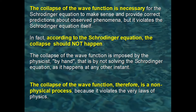The collapse of the wave function is necessary for the Schrödinger equation to make sense and provide correct predictions about observed phenomena, but the problem is that it violates the Schrödinger equation itself. The collapse is imposed by the physicist by hand, that is, by not solving the Schrödinger equation as it happens at any other instant. In fact, according to the Schrödinger equation, the collapse should not happen. In quantum mechanics, the Schrödinger equation has the same role as the three principles of dynamics in classical mechanics — it represents the fundamental physical law which determines the evolution over time of the wave function of any physical system. The collapse of the wave function is therefore a non-physical process, because it violates the very laws of physics.